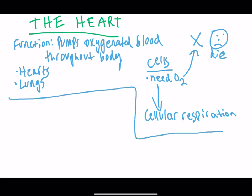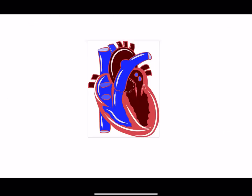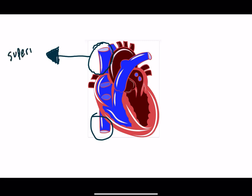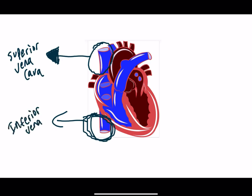Now that we know that, let's start labeling the basic structures of the heart — starting with the basic blood vessels. These two blood vessels are the biggest veins in your body. The top one is called the superior vena cava and the bottom one is called the inferior vena cava. Both the superior vena cava and the inferior vena cava are responsible for bringing deoxygenated blood.